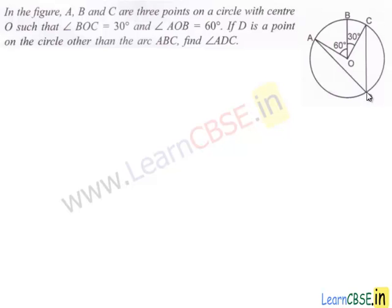If D is any point other than the arc ABC, we have to find angle ADC. If you look at the figure,